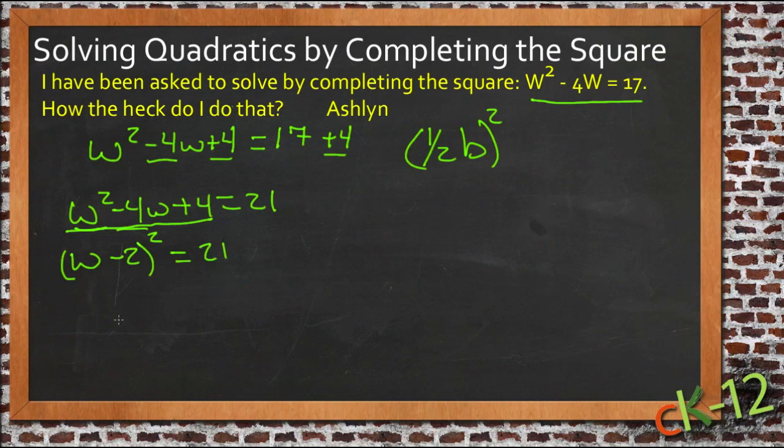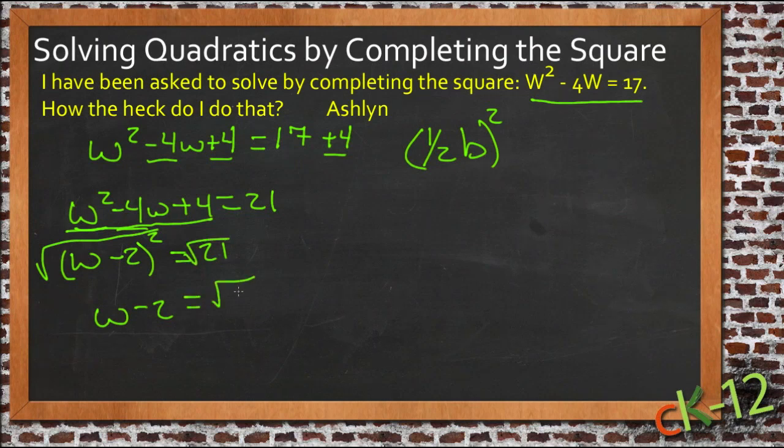So now we take the square root of both sides, and we get w minus 2. So I'll write in that square root so we can follow along visually. There we go. w minus 2 equals the square root of 21. And then add 2 to both sides, and we get w equals the square root of 21 minus 2.